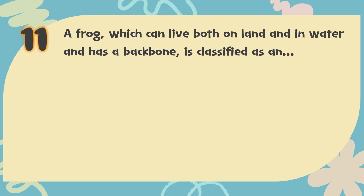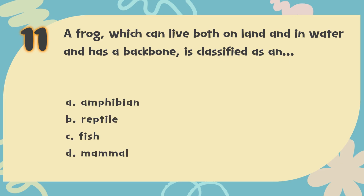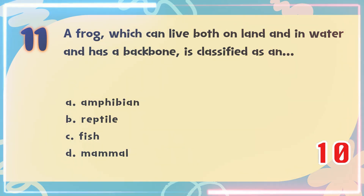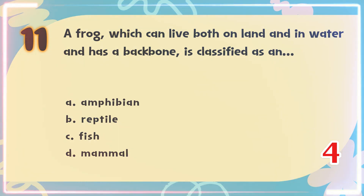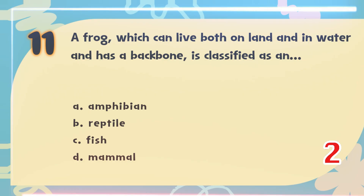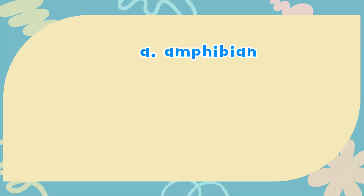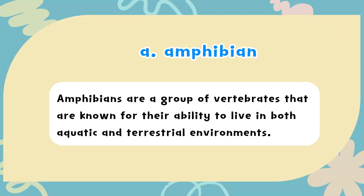Number 11: A frog, which can live both on land and in water and has a backbone, is classified as an — A. Amphibian, B. Reptile, C. Fish, D. Mammal. The correct answer is A. Amphibian. Amphibians are a group of vertebrates known for their ability to live in both aquatic and terrestrial environments.